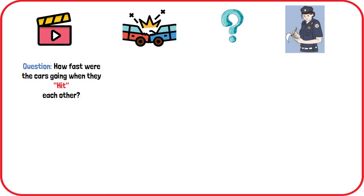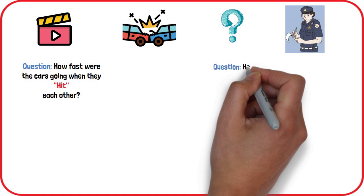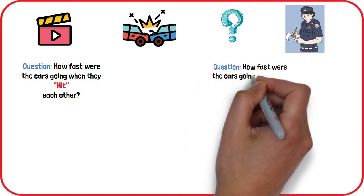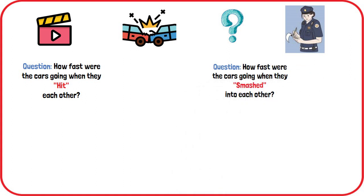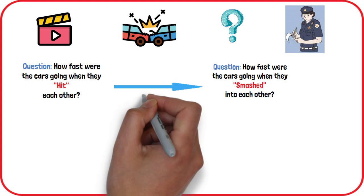In some instances, a subtle change was made — participants were instead asked how fast the cars were going when they smashed into each other. Researchers discovered that using the word 'smashed' instead of 'hit' could change how the participants remembered the accident.